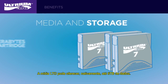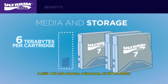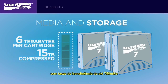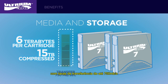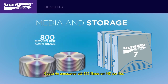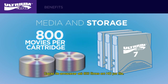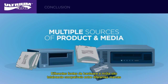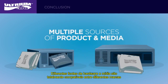LTO7 media offers up to 6 terabytes per cartridge native, up to 15 terabytes compressed, with transfer speeds up to 750 megabytes per second — capable of storing up to 800 HD movies per cartridge. LTO's open format also ensures multiple sources of product and media, as well as compatibility between different vendors' offerings.